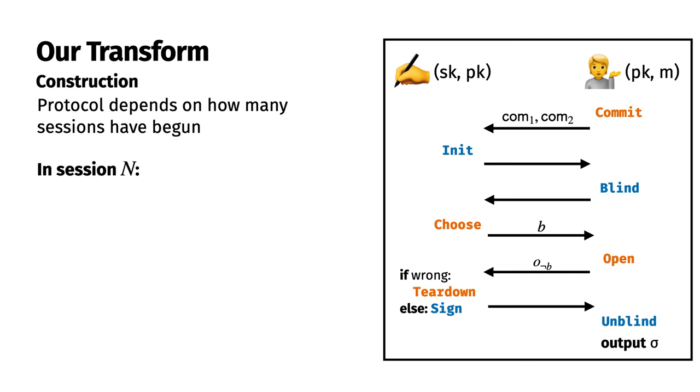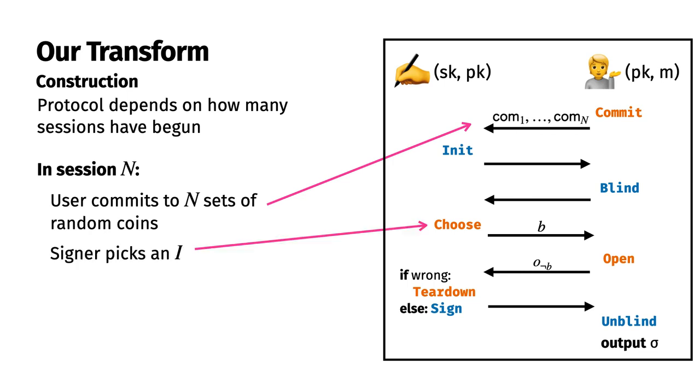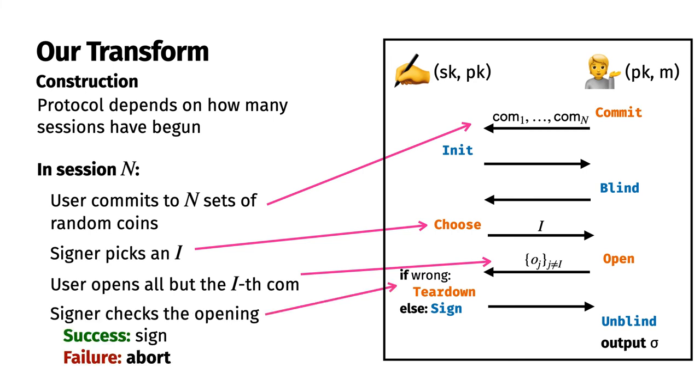In session n, the user commits to n sets of random coins rather than just two. Then, the user picks an index i, which will be the commitment that is not opened. The user opens all the commitments other than i. And finally, the signer checks all the commitments. On success, it signs just as before. On failure, it only aborts, rather than aborting and tearing down. This means that the signer can continue signing future sessions even if cheating is detected.